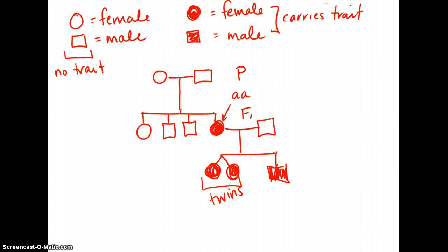I can call it little a, little a. So the genotype of that woman or that female is little a, little a. I know then, of course, that anyone that shows the trait is homozygous recessive. So all of these are little a, little a.